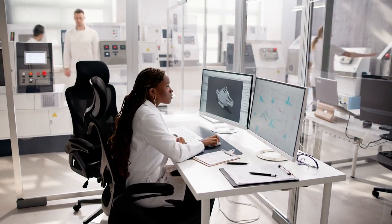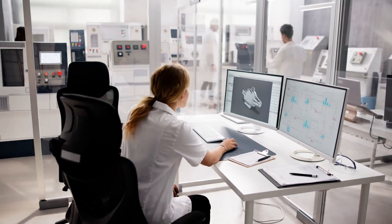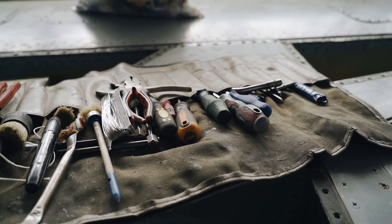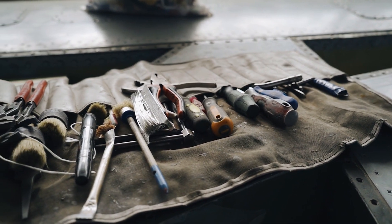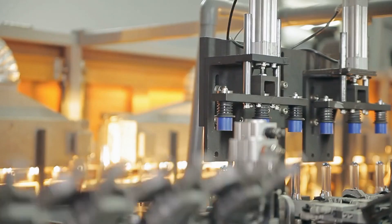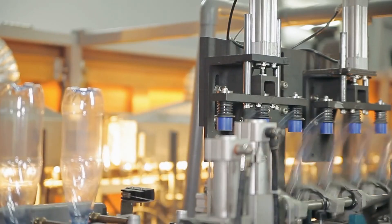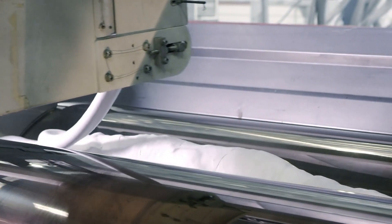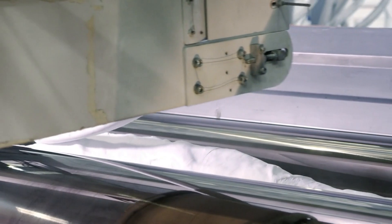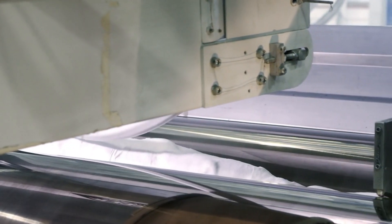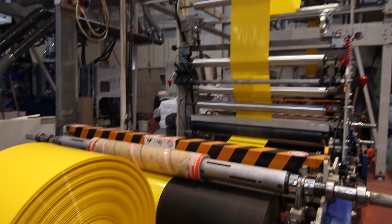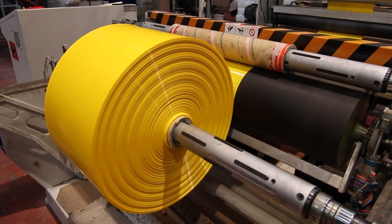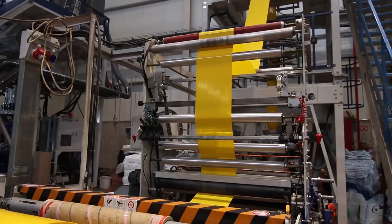The manufacturing sector would face immediate paralysis. Assembly lines would stop as conveyor belts disappear. Tools and safety equipment would vanish. Even the machines that make our goods rely heavily on plastic parts. The auto industry would shut down. Modern cars contain up to 50% plastic by volume. The aerospace industry would be grounded. Commercial aircraft rely on plastic components for everything from fuel systems to interior furnishings.